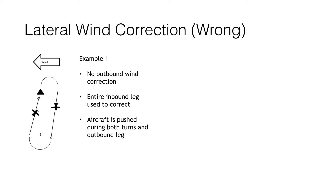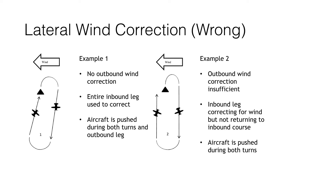In example two, Tom has figured out the wind and made a crab angle correction — angling into the wind to get the desired track — on both the outbound and inbound legs, giving him two nice straight legs. But he still didn't end up where he wanted to be. The problem is that wind doesn't stop just because the airplane is turning. Half the time in this pattern is spent turning, and the aircraft is still being pushed during those turns.